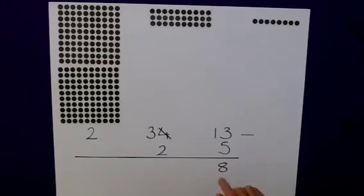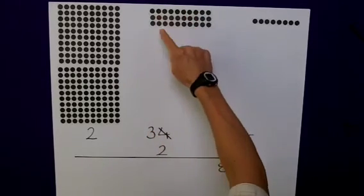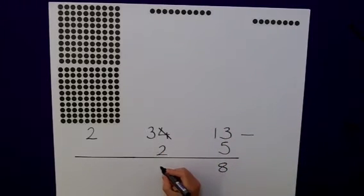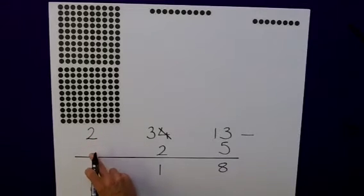I can then continue on and subtract my 20 away from my 30. Here's my 30. Take away 20, leaving me 1 lot of 10. I've still got 200 here. I'm not subtracting anything away from it. So, I've got 218 as my answer using the regrouping method.